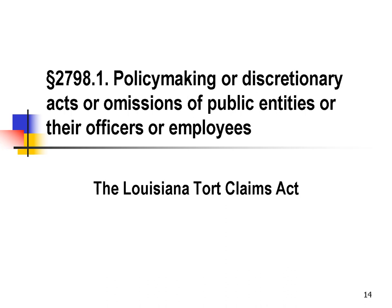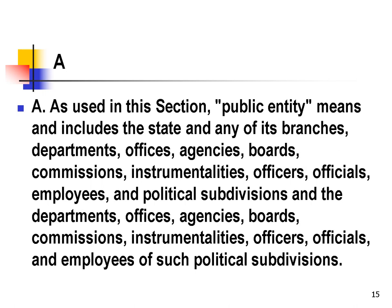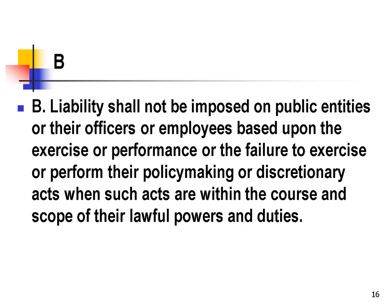Let's look at Section 2798.1, which is effectively the discretionary function exception for the Louisiana Tort Claims Act. We have a broad definition of public entity: state, its branches, departments, offices, agencies, etc. — which would probably include LSU. This is a key provision: liability shall not be imposed on public entities or their officers or employees based upon the exercise or performance or the failure to exercise or perform their policy-making or discretionary acts when such acts are within the course and scope of their lawful powers and duties. This language is not identical to the Federal Tort Claims Act, but it is very close.